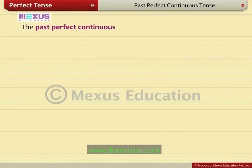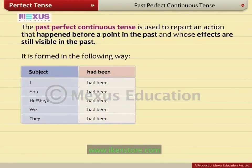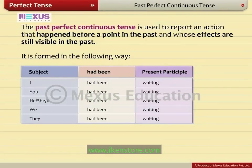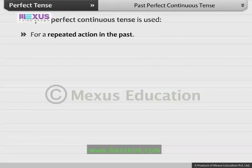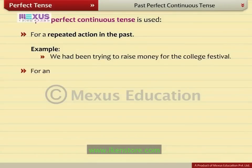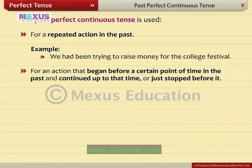The past perfect continuous tense is used to report an action that happened before a point in the past and whose effects are still visible in the past. It is formed as follows: had been plus present participle. For example, she had been waiting for you. It is used for a repeated action in the past — for example, we had been trying to raise money for the college festival — and for an action that began before a certain point of time in the past and continued up to that time or just stopped before it. For example, the children had been playing in the garden when it started to rain.